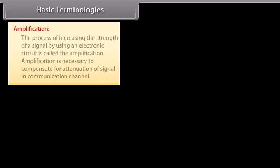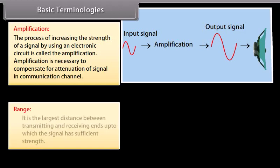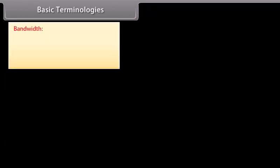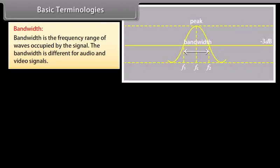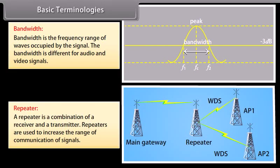Amplification is the process of increasing the strength of a signal using an electronic circuit. Amplification is necessary to compensate for attenuation in the communication channel. Range is the largest distance between transmitting and receiving ends up to which the signal has sufficient strength. Bandwidth is the frequency range of waves occupied by the signal. A repeater is a combination of a receiver and a transmitter, used to increase the range of communication.